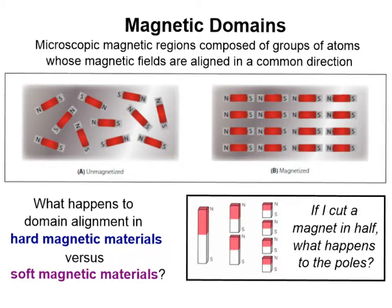What happens to domain alignment in hard magnetic materials versus soft magnetic materials? Remember we had talked about that before. In a hard magnetic material, the domain alignment persists after the external magnetic field is removed, thus a permanent magnet. In a soft magnetic material, like iron, once that external field is removed, then we get this random motion of the particles again, and the orientation is not like this.